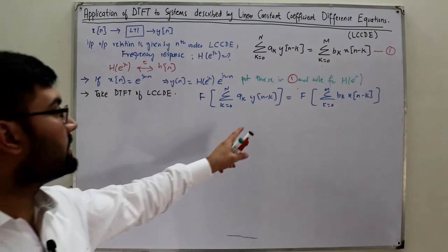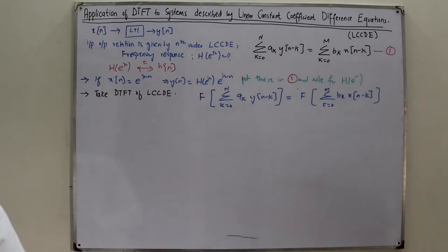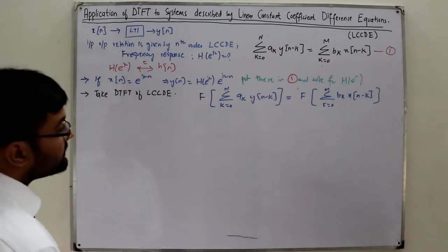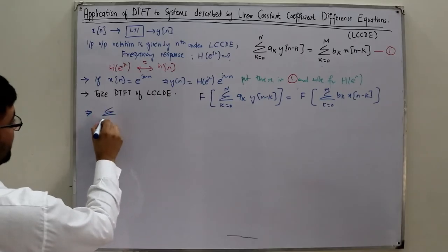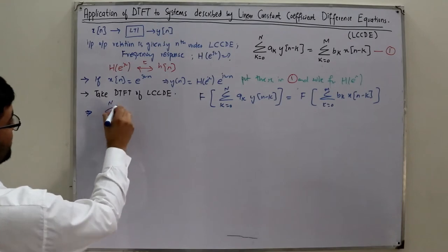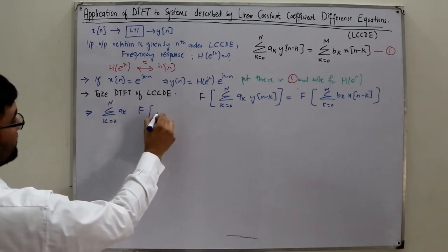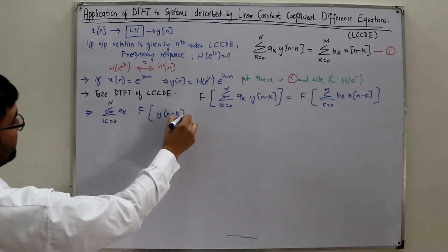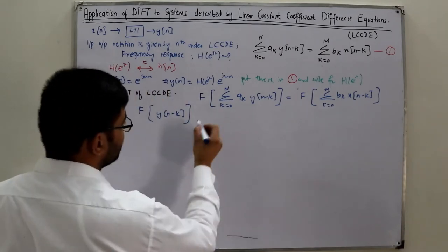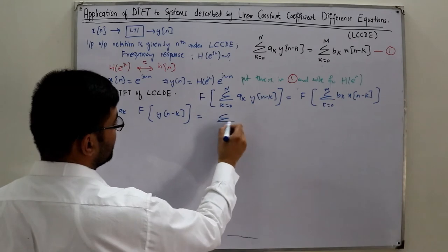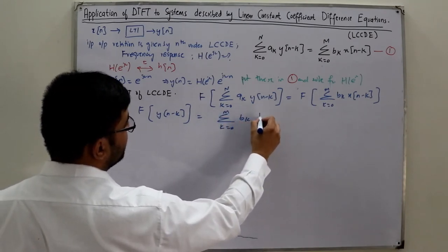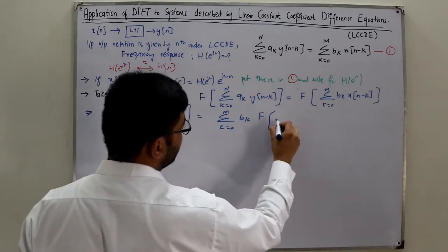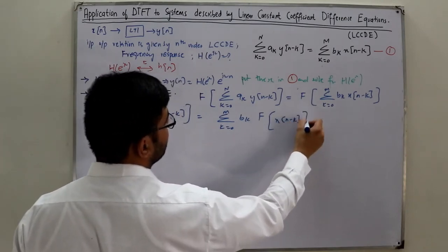Since a_k is a constant, we can take it outside the Fourier transform along with the summation. This gives us: summation k from 0 to N of a_k times the Fourier transform of y(n-k). Similarly, on the right side, we take the summation outside with b_k and are left with the Fourier transform of x(n-k).